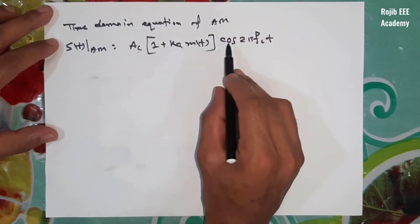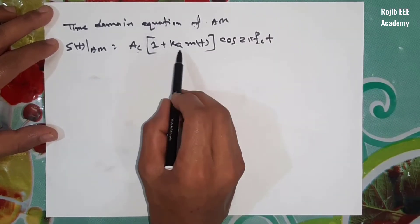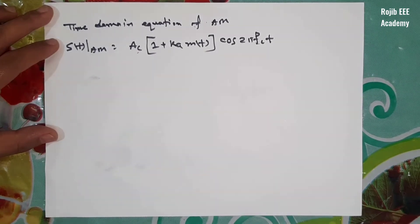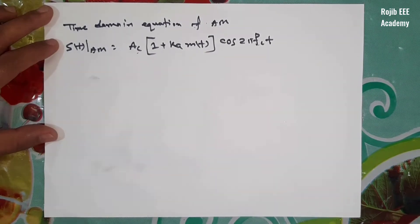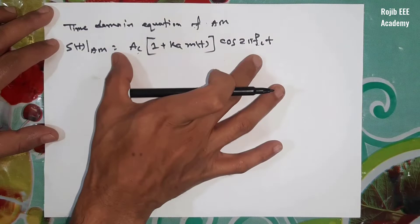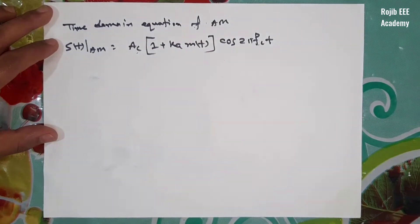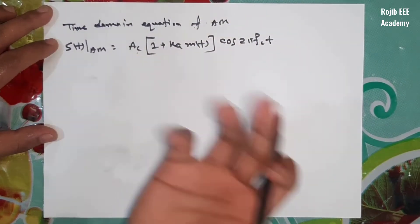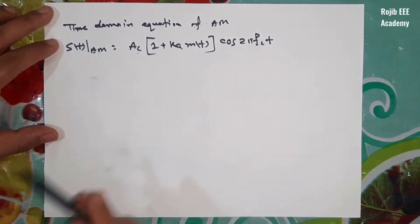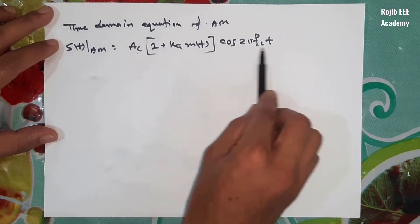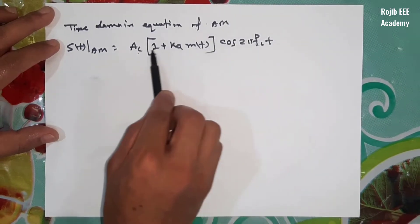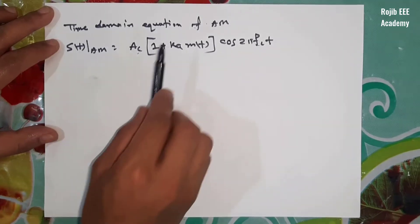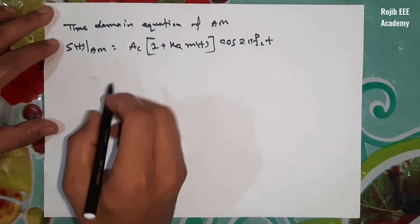As we look at the AM signal, it is very important to know how to change the message signal. If we are looking at the correlation and moving through the steps, we move to the next method.